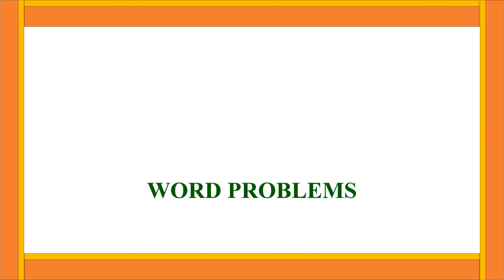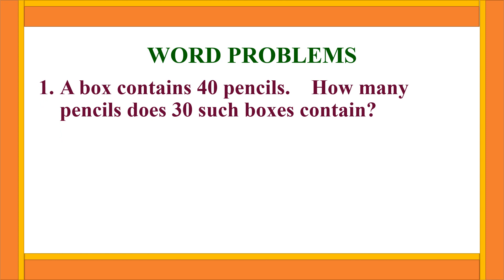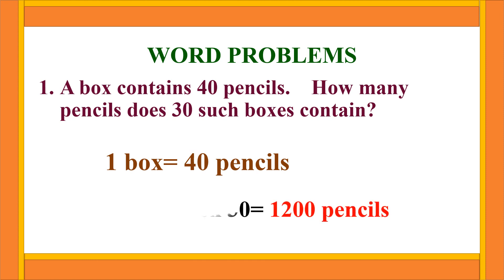Now we will start doing some word problems or story problems. First question: A box contains 40 pencils. How many pencils does 30 such boxes contain? In one box there are 40 pencils. For 30 boxes: 30 times 40, that means 40 into 30 is equal to 1200. The answer is 1200 pencils.